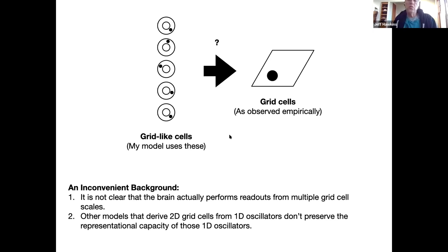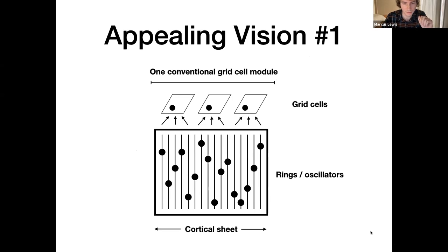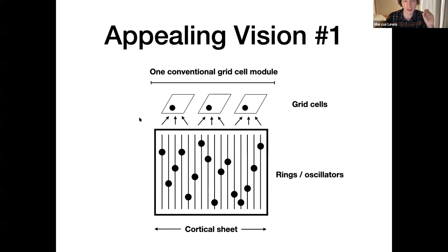So to reiterate — we lose all that extra information when you go to 2D cells, right? Yeah. Those other models kind of collapse onto a small set of combinations that are allowed. An appealing vision is that the cortical sheet consists of a set of these 1D grid cell analogs or oscillators that are then being read out by local grid cells. You might have multiple of these readouts occurring within one module.